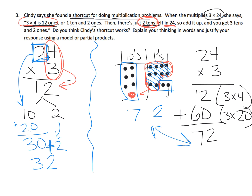The issue is that with these 2 tens, we had 3 rows of 2 tens. Whereas Cindy only added 1 group of 2 tens — she never multiplied the 3 times the 2 tens. That's where Cindy's mistake is: she forgot to multiply the tens by 3.